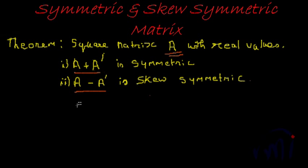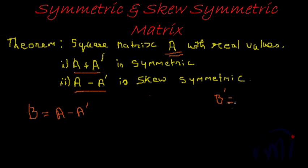Now, for a skew symmetric matrix, B is equal to A minus A transpose. For a matrix to be skew symmetric, B transpose must equal minus B, the negative of B. When we flip it, it translates into minus 1 multiplied by B. If we can prove this, then we know A minus A transpose is a skew symmetric matrix.